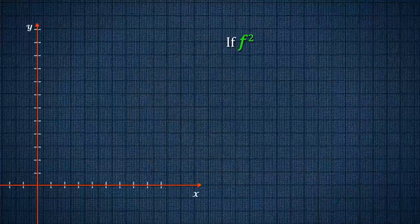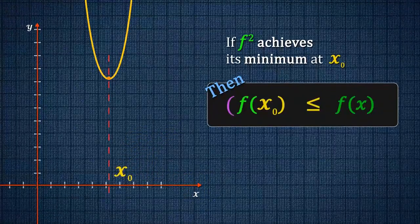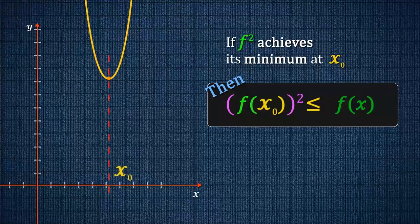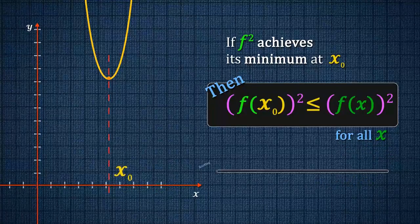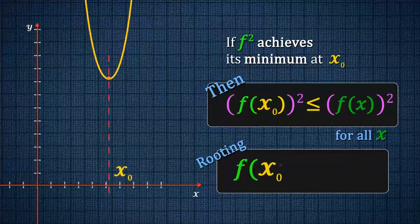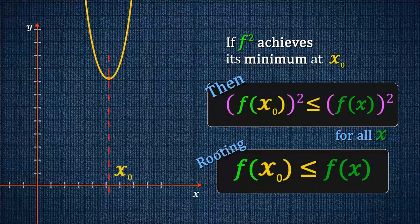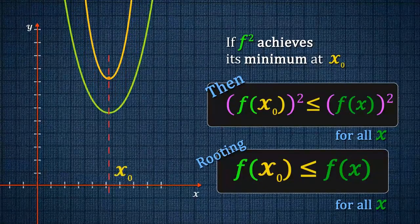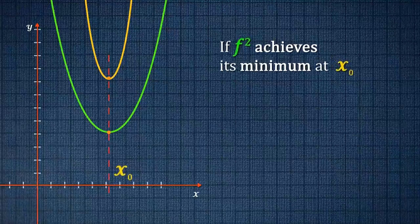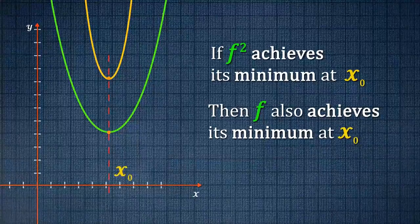Conversely, if f squared achieves its minimum at x0, then f of x0 squared is less than or equal to f of x squared for all x. Taking the square root, f of x0 is less than or equal to f of x for all x. That is, f also achieves its minimum at x0.